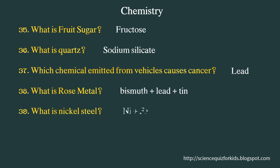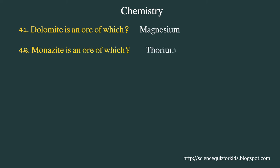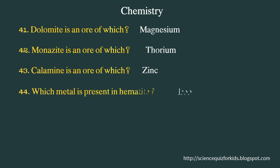What is nickel steel? Nickel and iron. What is delta metal? Copper, zinc and iron. Dolomite is an ore of which element? Magnesium. Monazite is an ore of which element? Thorium. Calamine is an ore of which element? Zinc. Which metal is present in hematite? Iron.